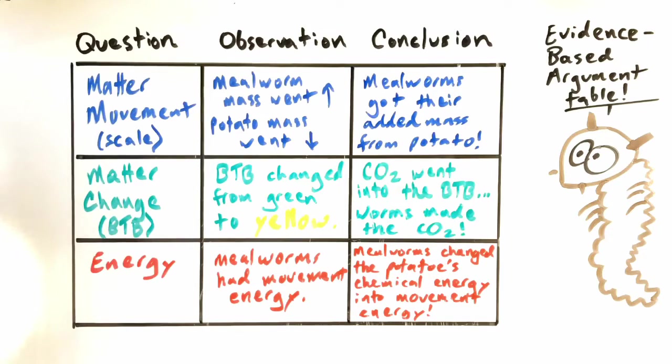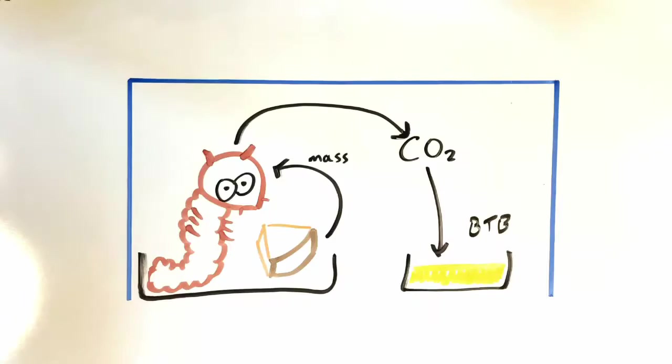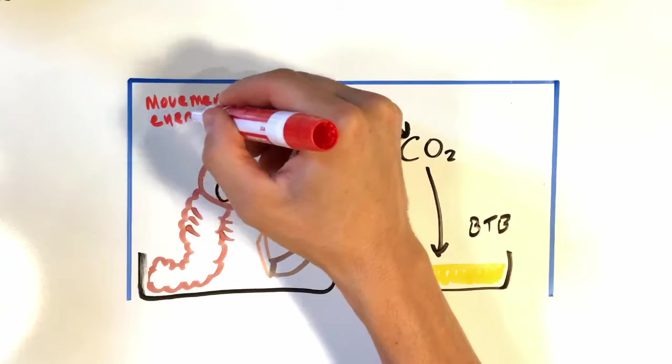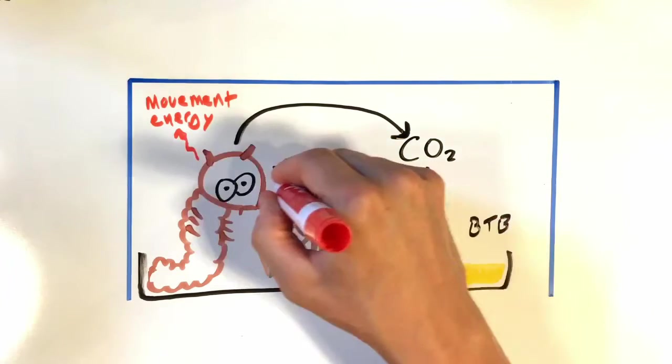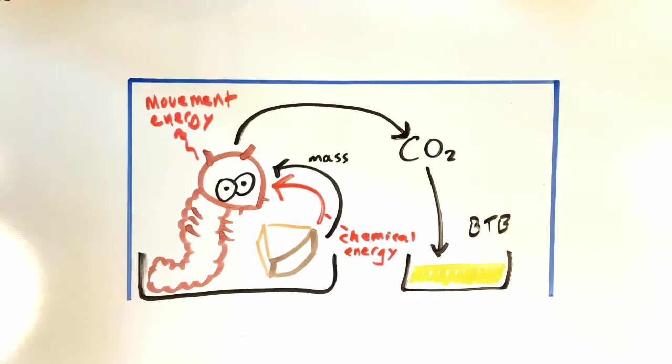The last thing we need to model is what's going on with energy. We saw movement energy in the worms. And we concluded that that movement energy was really coming from chemical energy in the potato. The worms were converting the chemical energy in their food into movement energy. So here is our complete model of what happens at the macroscopic scale when an animal eats food.